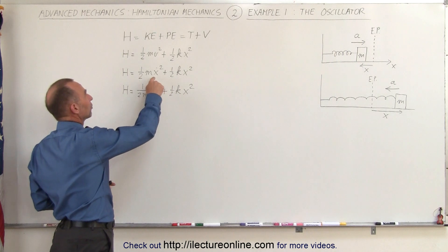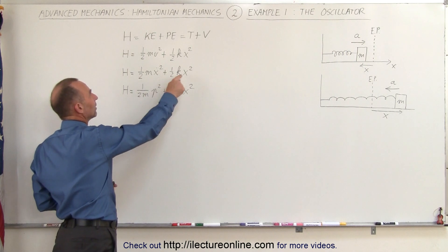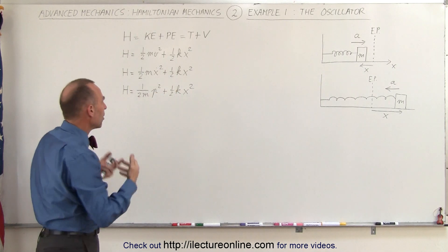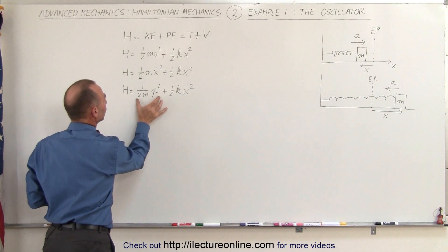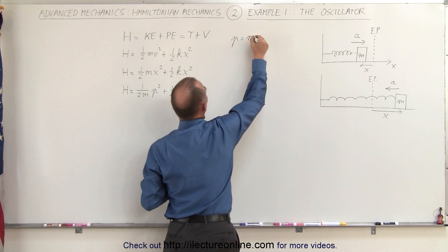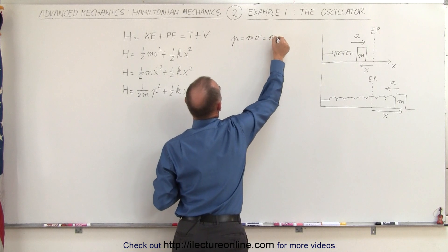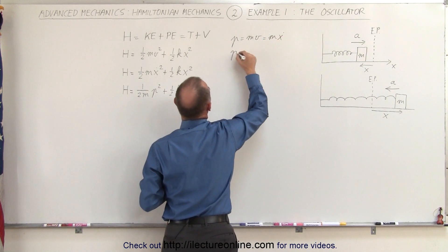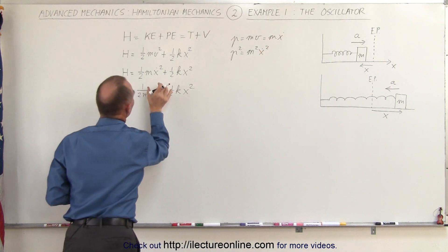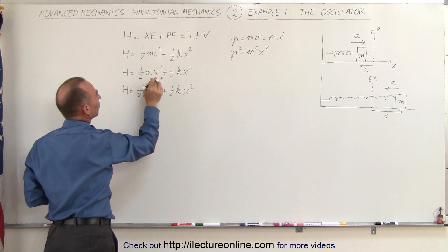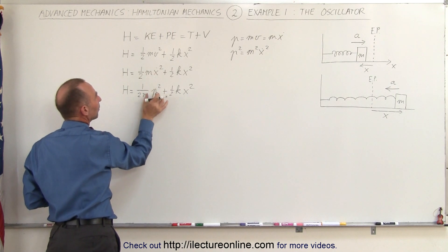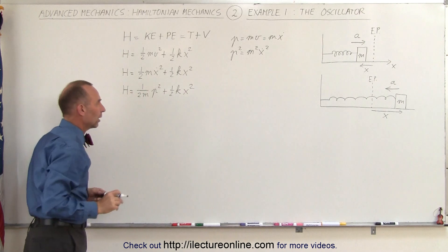We can then write it in generalized coordinates with ẋ, so that here we have ẋ and x. We can write it as a function of momentum, at least this portion of the Hamiltonian. Remember that p, the momentum, is equal to mv, which means it's equal to m times ẋ. And momentum squared is equal to m² times ẋ². So since we have mẋ², we multiply this times m, divide by m, and then we can replace m²ẋ² by p².